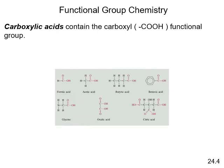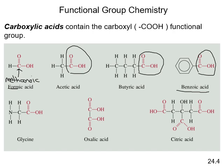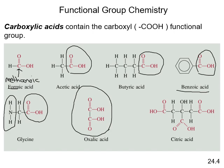Carboxylic acids are very common in nature. Formic acid (methanoic acid) has one carbon — 'form' indicating one carbon. Benzoic acid is the common name for the benzene-ring carboxylic acid. Glycine is an amino acid with both an amino group and a carboxylic acid group. Oxalic acid is found in spinach and can cause oxalate kidney stones if consumed in excess. Citric acid, found in oranges, has three acidic functional groups — no wonder it burns on a cut.